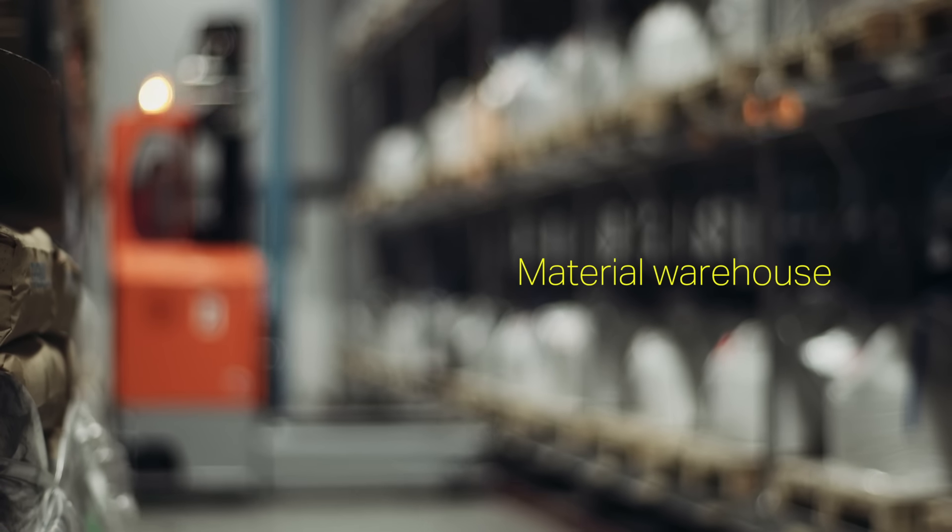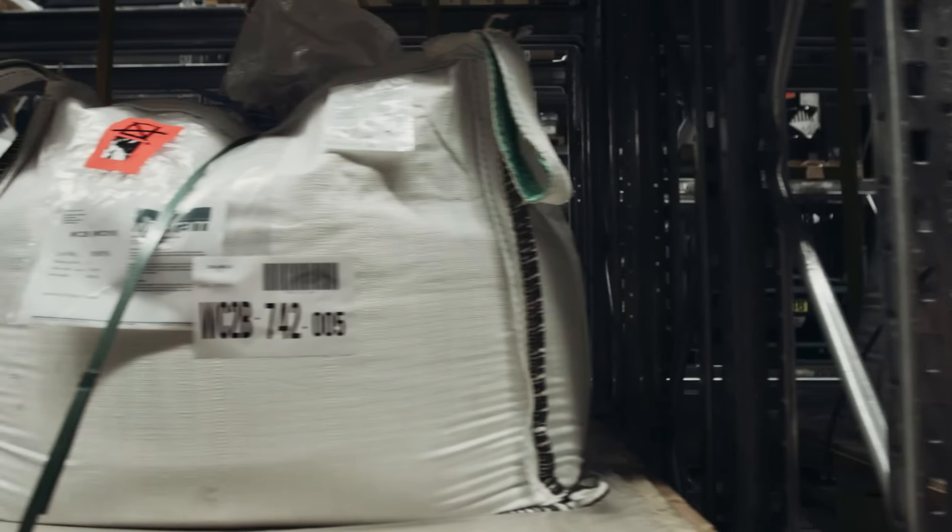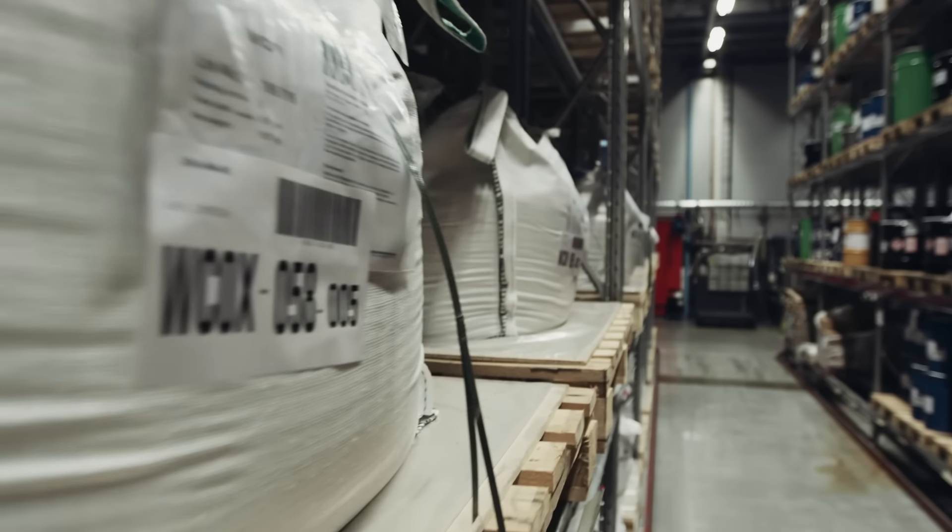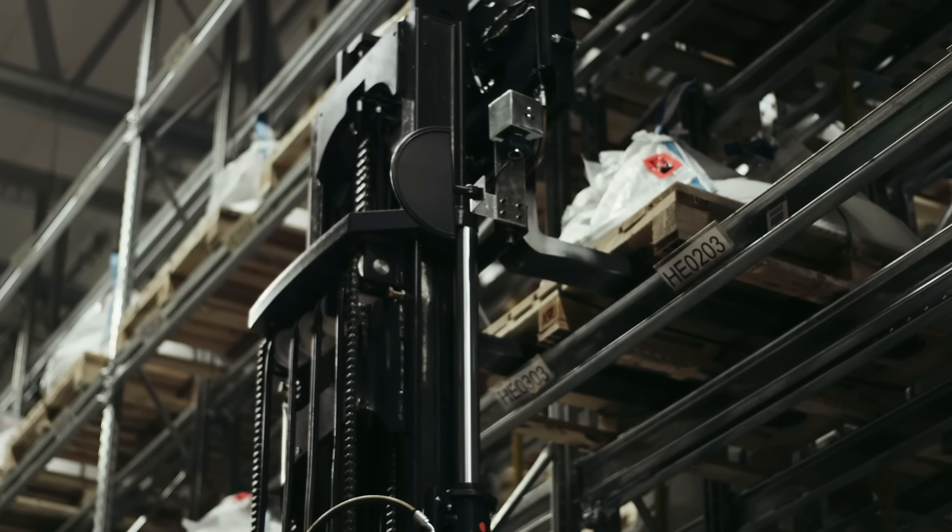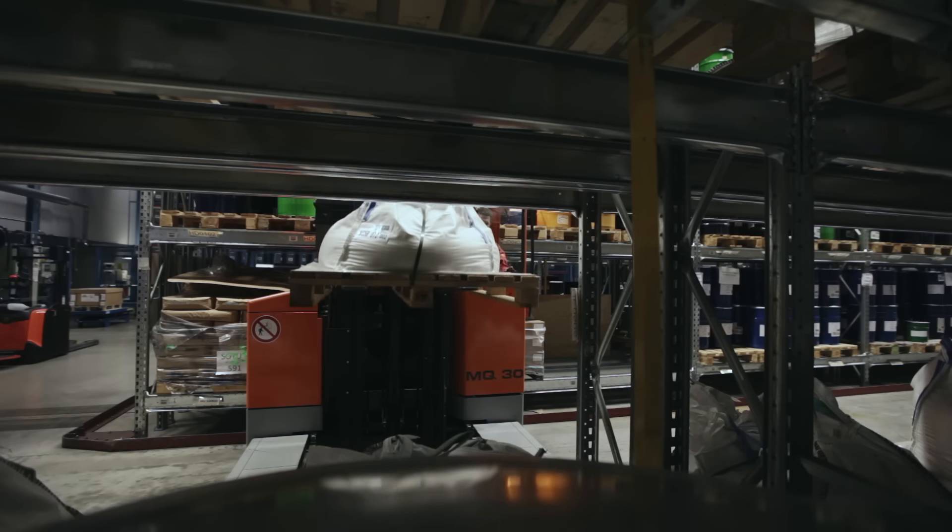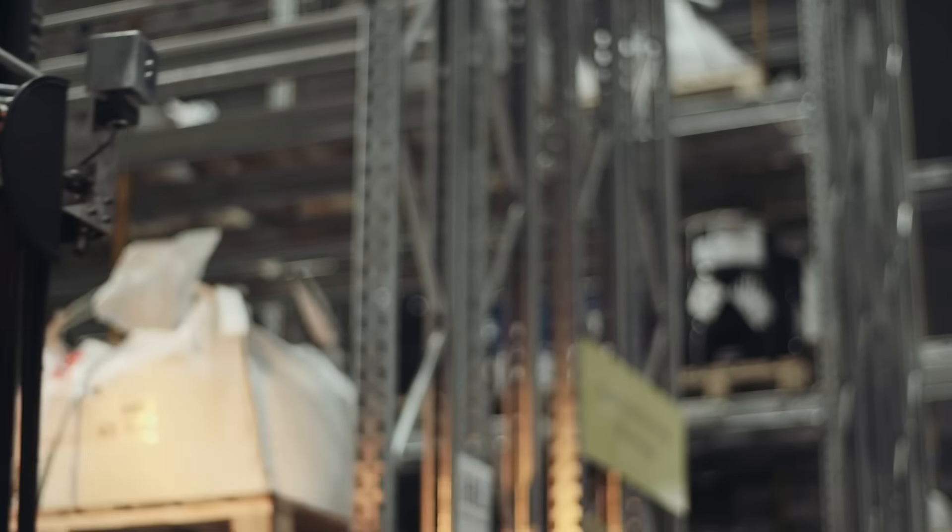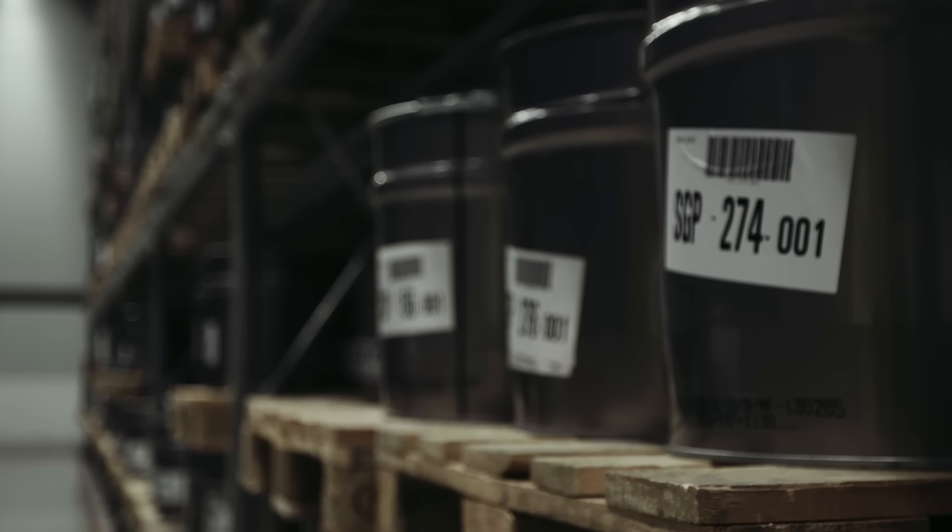In the material warehouse, row after row of raw material are stacked. The tungsten carbide we use is either recycled or comes from our own mine in Austria. Cobalt, titanium and all other ingredients come from carefully selected suppliers, each batch meticulously tested in the lab.